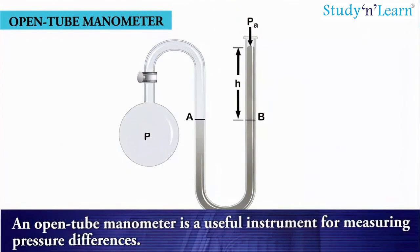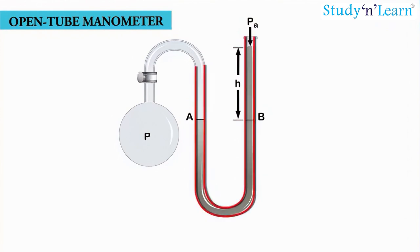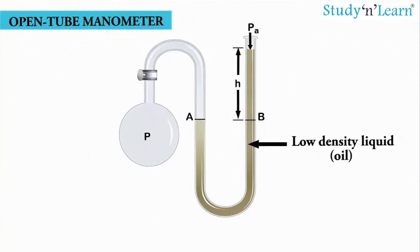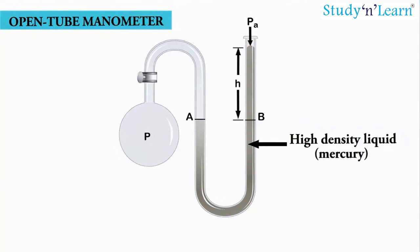An open tube manometer is a useful instrument for measuring pressure differences. It consists of a U-tube containing a suitable liquid — a low-density liquid such as oil for measuring small pressure differences, and a high-density liquid such as mercury for large pressure differences. One end of the tube is open to the atmosphere and the other end is connected to the system whose pressure we want to measure.